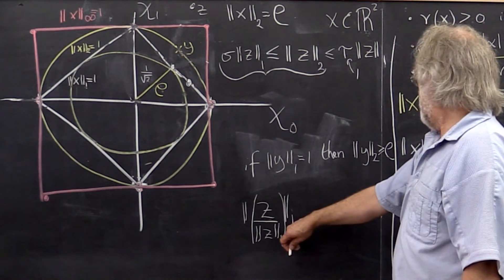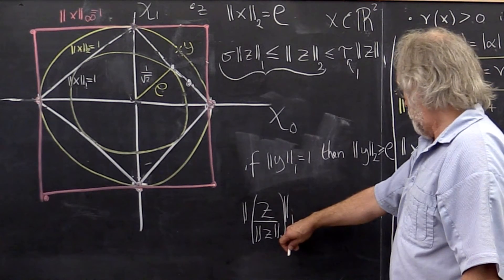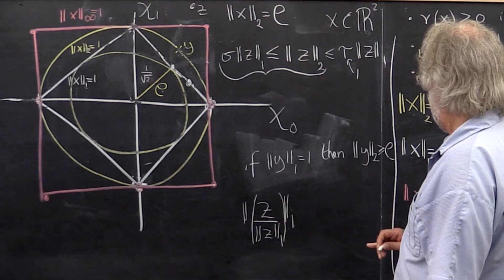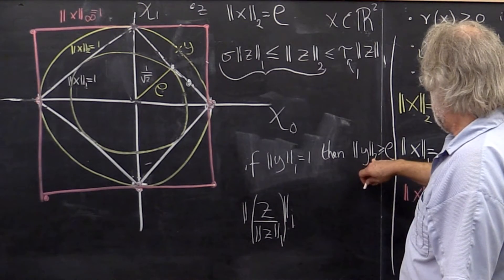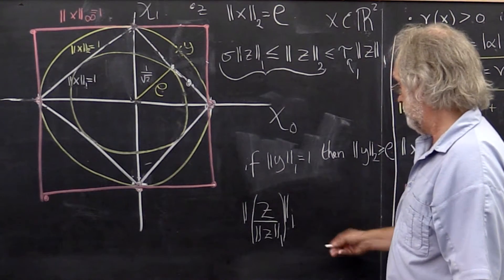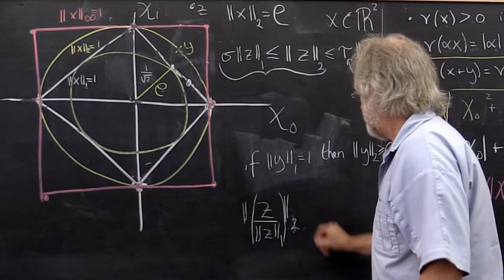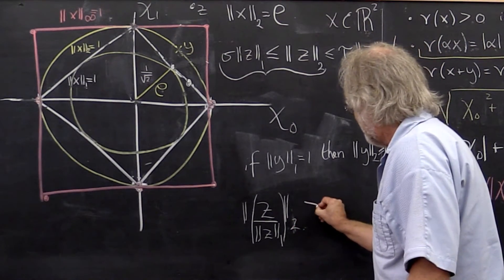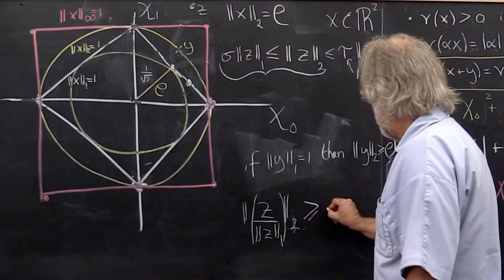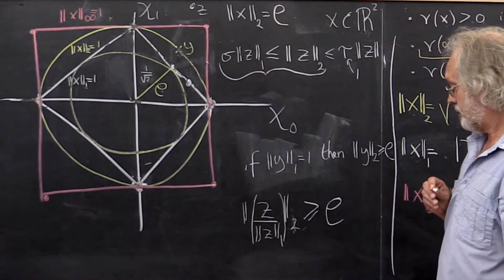What do we then know? We know that its 2-norm is greater than or equal to rho. So now we can look at this and say that is greater than or equal to rho.